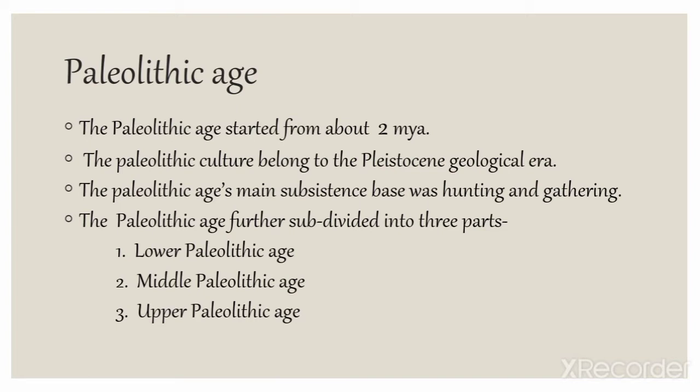Paleolithic is the oldest part of the Stone Age. It started 2 million years ago and belongs to the Pleistocene geological age. During the Pleistocene there were many ice ages, so the climate was very cold. The main subsistence base at this time was hunting and gathering — people were completely dependent on hunting and gathering for their survival.